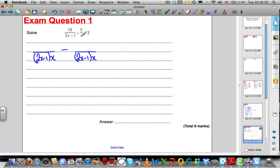I cross-multiply this x, I multiply it by 10 and I get 10x. This 2x minus 3, I multiply it across here by the 3 and I get 3 times 2x minus 1 and all of that is equal to 3.